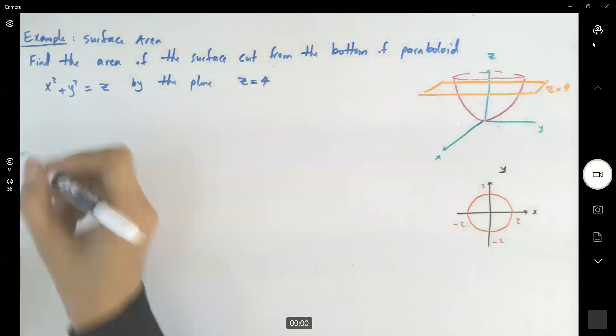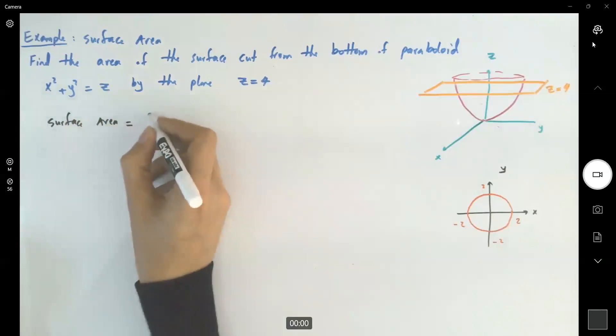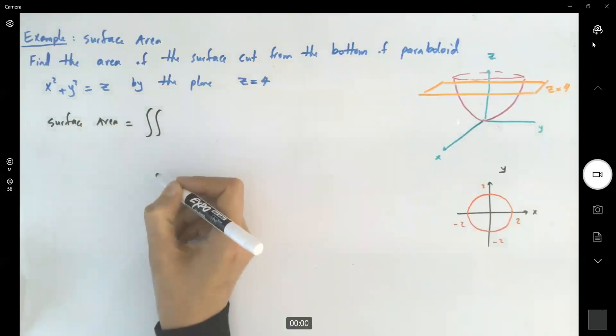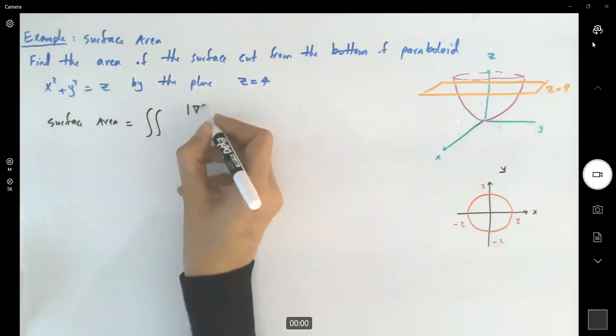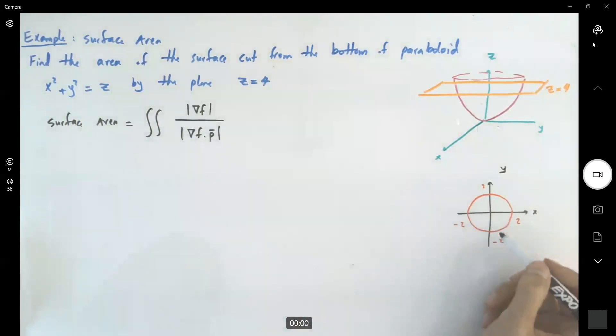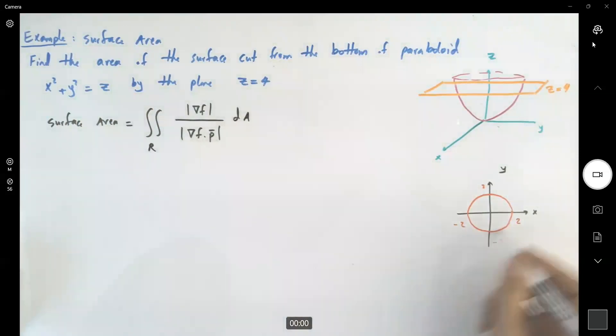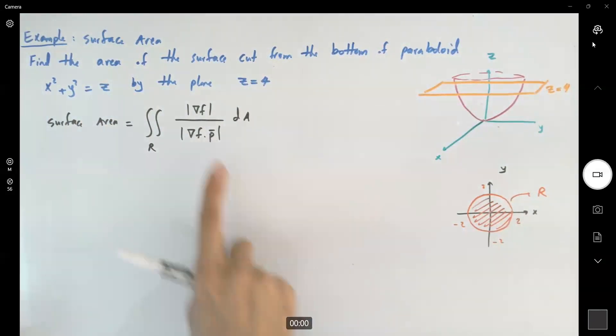What are we going to do? We're going to apply the formula. We know that the surface area follows a double integral of the magnitude of gradient of f divided by the magnitude of gradient of f dot p, where p is the unit vector normal to the region, over region r. And this is region r that you're dealing with.